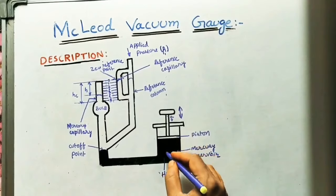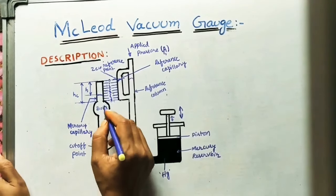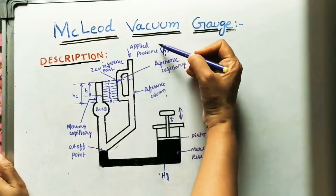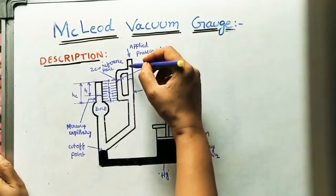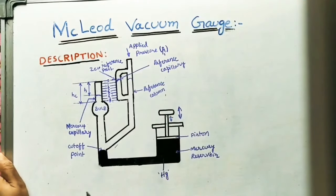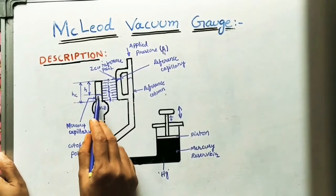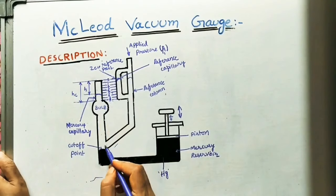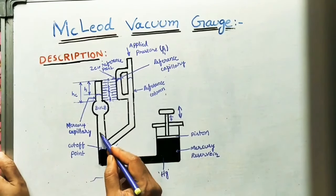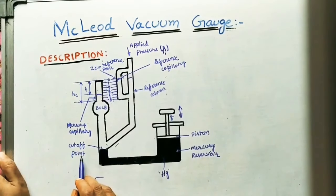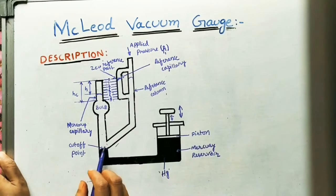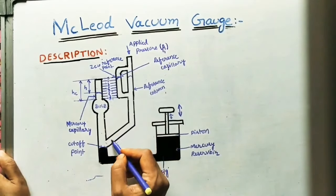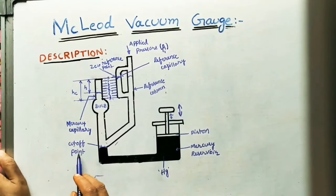If I apply force in the downward direction, mercury will come up and occupy the bulb, stopping at some point. Gas of pressure P1 is supplied through this inlet — it comes inside and fills the entire column when there is no mercury. If I apply force, mercury will come up. At the cutoff point, if mercury rises above, gas cannot pass through because of the mercury. So below the cutoff point, gas flows freely; above the cutoff point, mercury blocks the gas. That is why it is called the cutoff point for the gas.